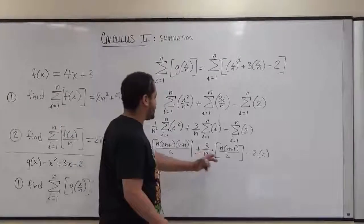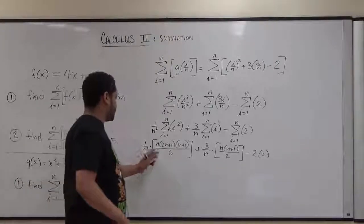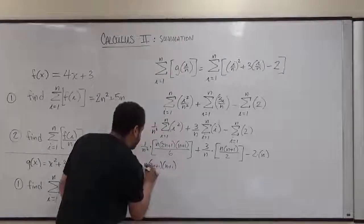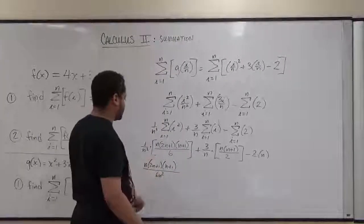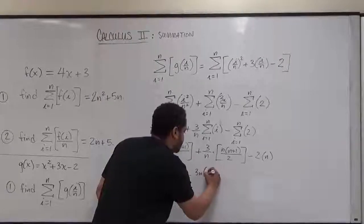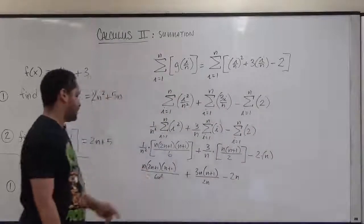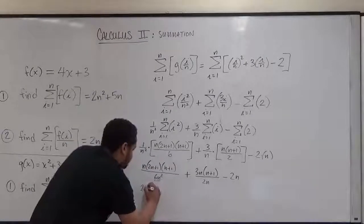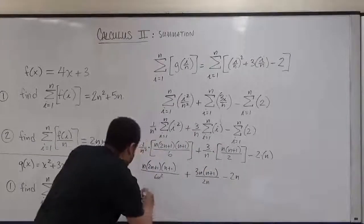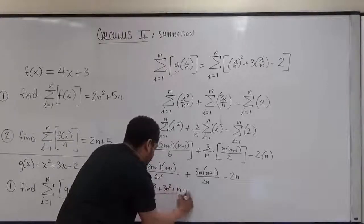Now we simplify. The first term becomes n times 2n plus 1 times n plus 1 over 6n squared. Distributing the numerator gives 2n cubed plus 3n squared plus n, all over 6n squared. For the second term, combining 3 over n with n(n+1) over 2 gives 3n squared plus 3n over 2n. The final term is minus 2n.